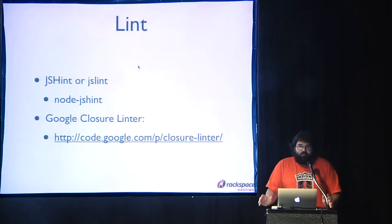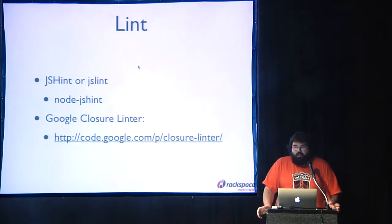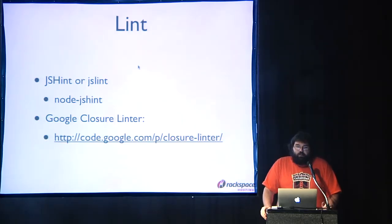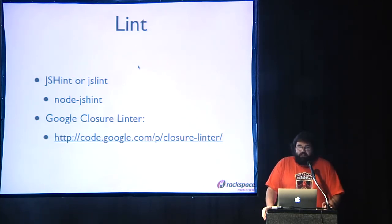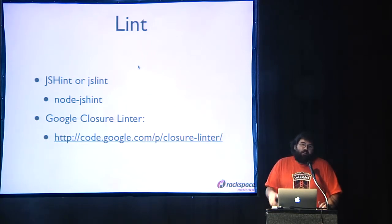On linting: you should also use jshint or jslint, depending on whether you believe Crockford is right all the time. There is jshint, which makes it easy — it's just an npm install. The one project we've been using a lot is Google Closure Linter, which is actually written in Python but enforces code style according to Google's coding style guidelines. We found it very helpful to have a coding standard — we just adhere to the Google coding standard and Closure Lint is a very helpful tool for maintaining that.